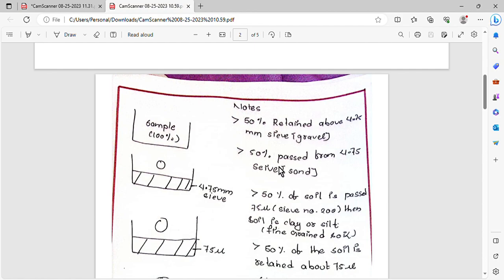30% retained means 70% passed. Since greater than 50% passed sieve number 4, it is sandy soil.